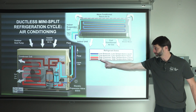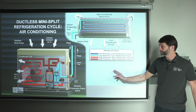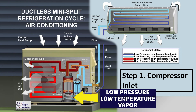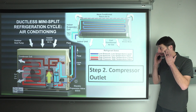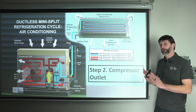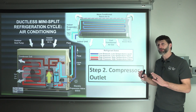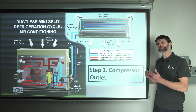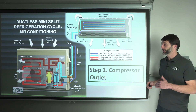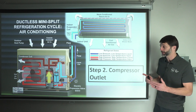Note those refrigerant states as we go through this system. Step one: low pressure, low temperature vapor enters the rotary compressor. Step two: high pressure, high temperature vapor exits the rotary compressor. The compressor is compressing vapor only — no liquid, no saturated refrigerant. Saturated refrigerant means both liquid and vapor exist at the same time, and there is none of that entering or exiting the compressor.